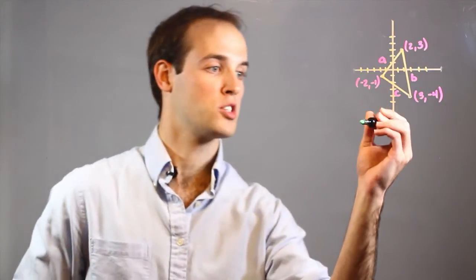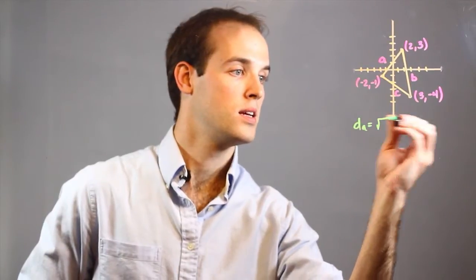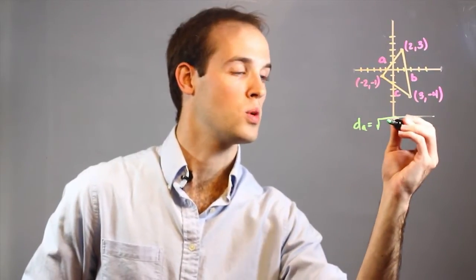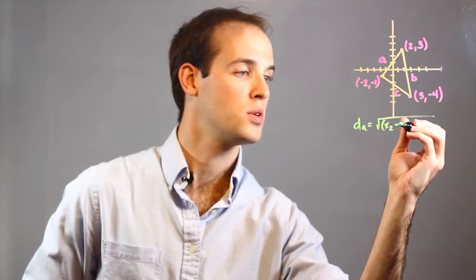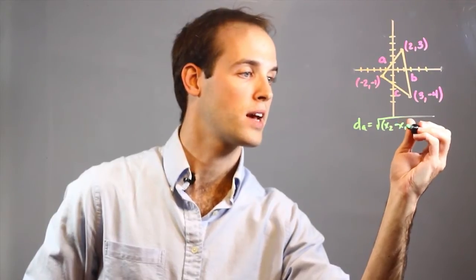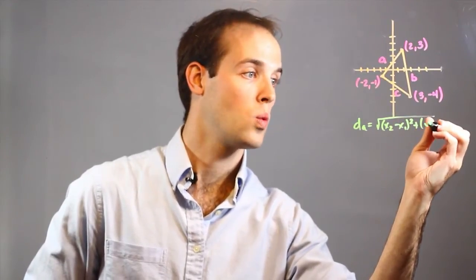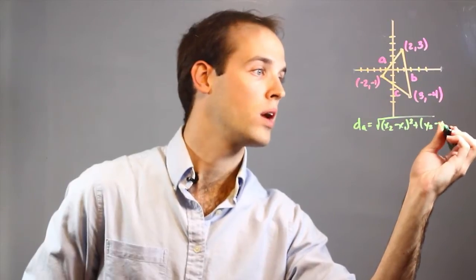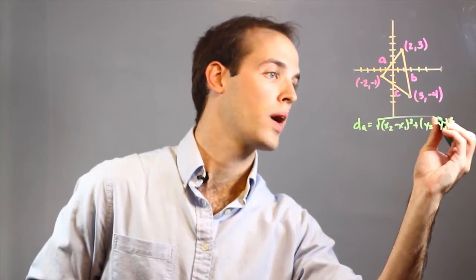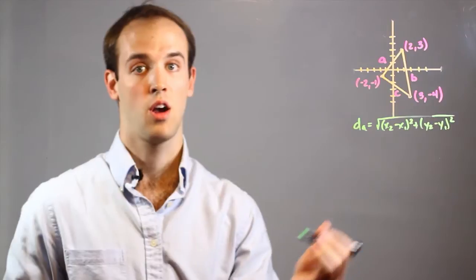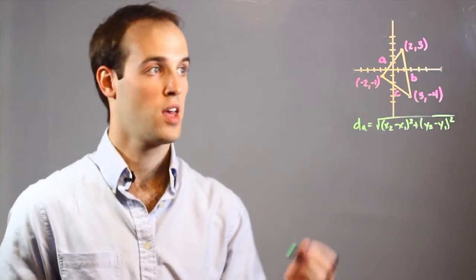So the distance formula is just like this: D equals the square root of (x2 minus x1) squared plus (y2 minus y1) squared. And to use it, all we have to do is plug in the coordinates that we already know.